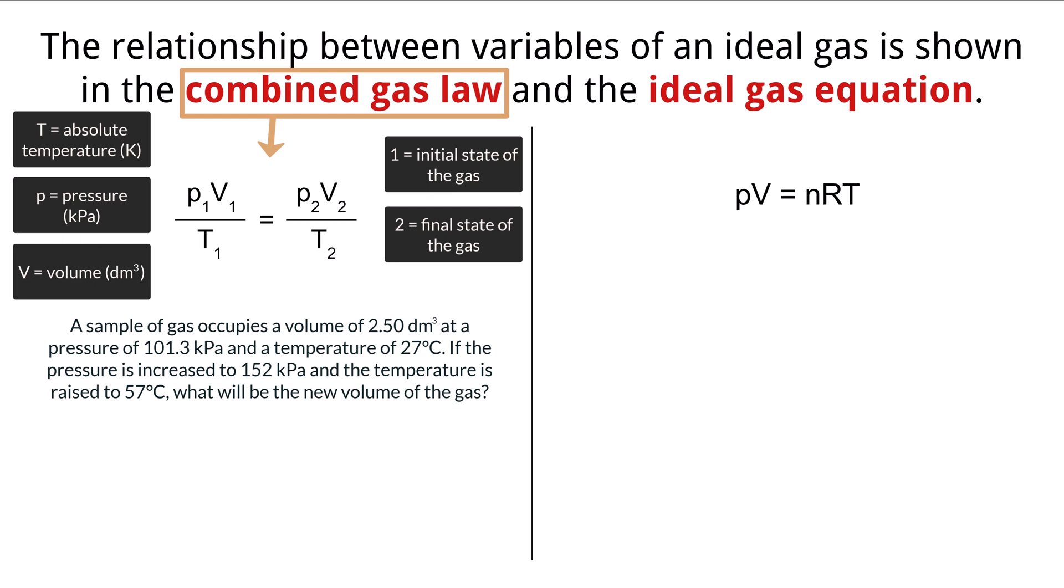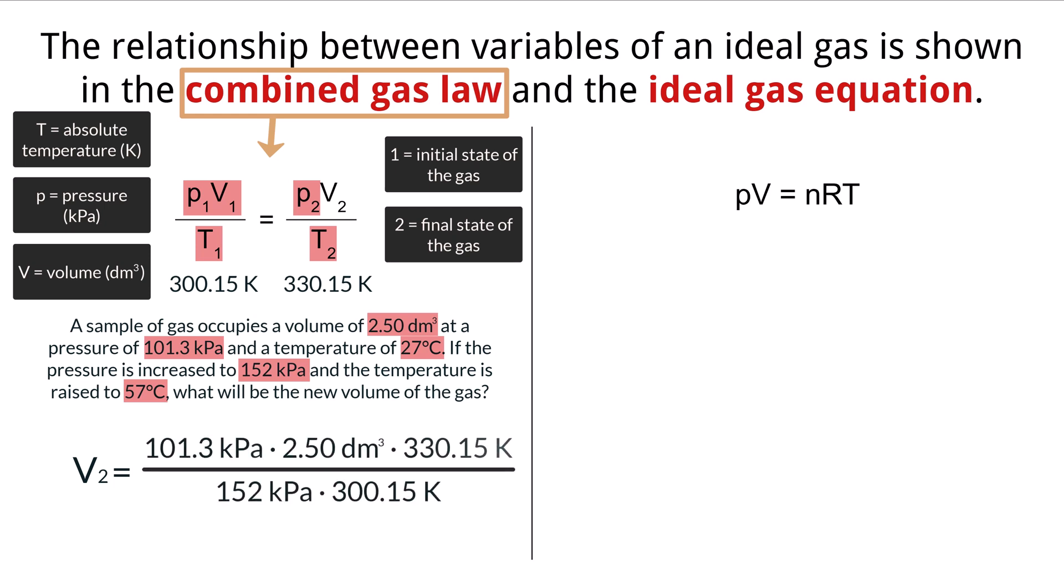If the pressure is increased to 152 kilopascals and the temperature is raised to 57 degrees Celsius, what will be the new volume of the gas? You can see from the question that we are given five out of six variables in our equation. To keep our units functioning properly, we need to convert both Celsius measurements into Kelvin. We can do that by adding 273.15 to both values. To make things easier, we can use some algebra to rearrange the equation where we are solving for our unknown variable, V2. We plug in the numbers and do some algebra to solve for the final volume, which will end up being 1.83 cubic decimeters.